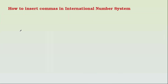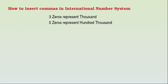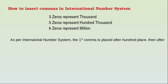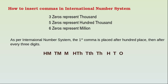Now we are going to insert commas in the international number system. Thousand has three zeros, hundred thousand has five zeros, and million has six zeros. As per the international number system, the place values are: ones, tens, hundred, thousands, hundred thousand, million, ten million, hundred million.